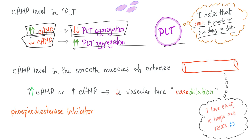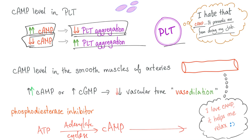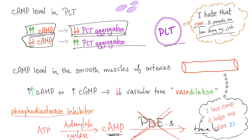Today's topic is phosphodiesterase inhibitors. We start with ATP. Thanks to adenylate cyclase, we get cyclic AMP. Then some enzyme — phosphodiesterase, probably phosphodiesterase 3 — degrades the cyclic AMP into pieces of trash. When we use phosphodiesterase inhibitors, nothing degrades the cyclic AMP. The level of cyclic AMP rises. In arterial smooth muscle, you get vasodilation. In platelets, you inhibit platelet aggregation.